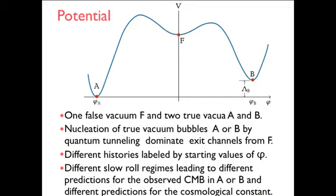I'm now going to apply that to a potential which does allow for false vacuum and eternal inflation. Here it is. This potential has one false vacuum here. For histories that are concentrated here, those, they will expand rapidly with a cosmological constant that's basically the distance up like that. But they can get out of this by tunneling through these barriers, forming bubbles of true vacuum. So a nucleation of true vacuum bubbles by quantum tunneling, and that dominates the exit channels. The different histories are labeled by the starting values of phi, starting here or maybe starting here and rolling down. Different slow-roll regimes lead to different predictions both for the observed CMB, which is basically a function of the form of the potential right near these minima, and different cosmological constants.